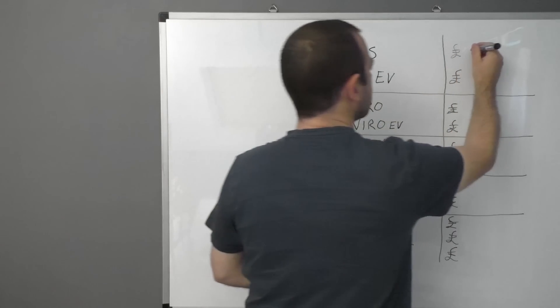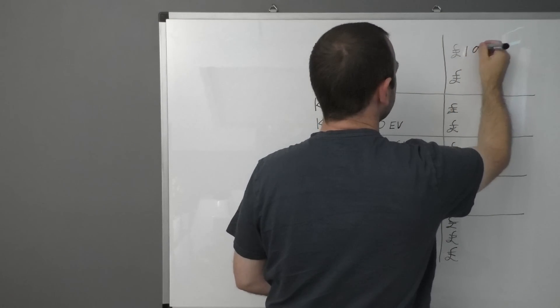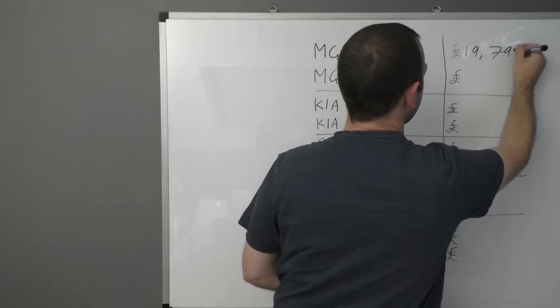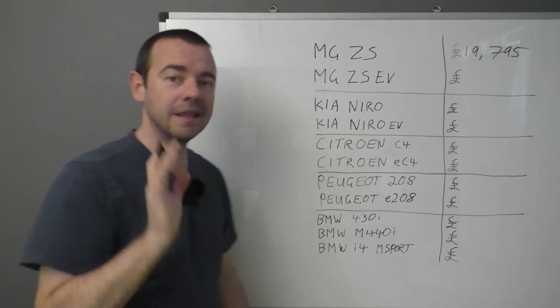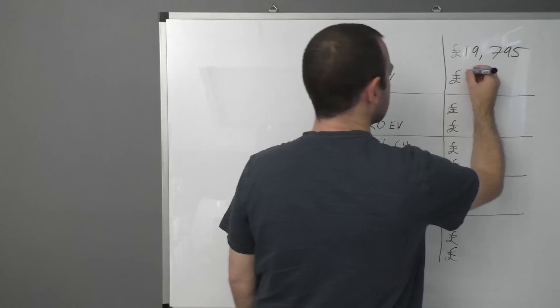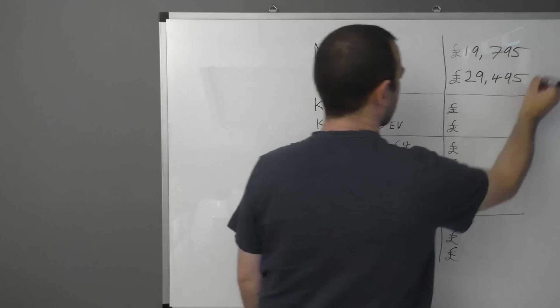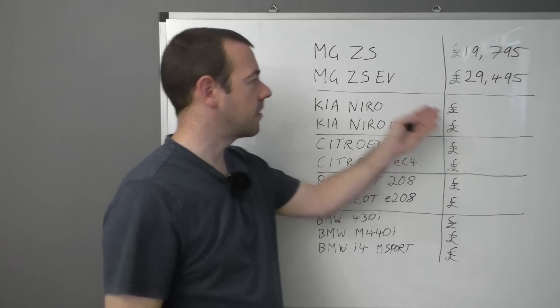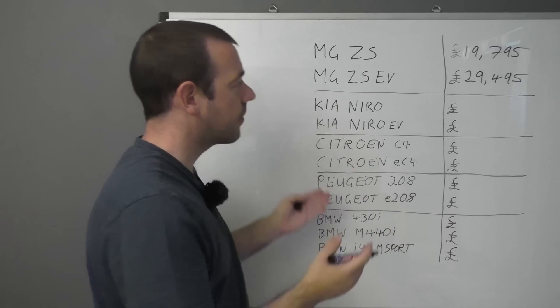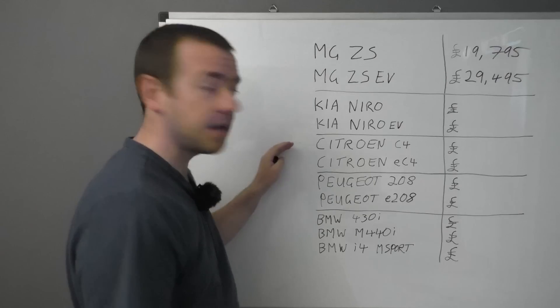Now the MG ZS, the petrol version, this is the more powerful petrol engine one, even though it's still not as powerful as the electric motor. That is £19,795. So clearly, that's significantly more expensive. Not far off £10,000 more expensive. And again, not far off 50%, 40 odd percent more expensive. Let's see if that trend continues.